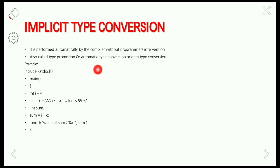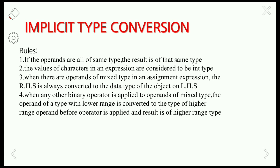It is called automatic type conversion because the compiler does it automatically based on the priority of the data type. The C compiler follows specific rules to determine the type of the final result when evaluating expressions. Let us check those rules.